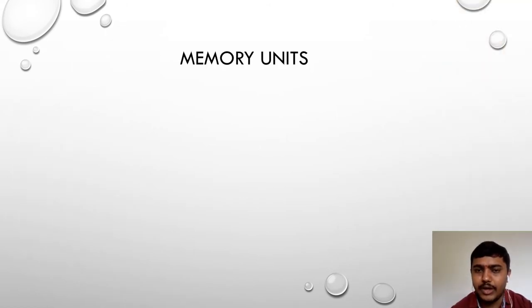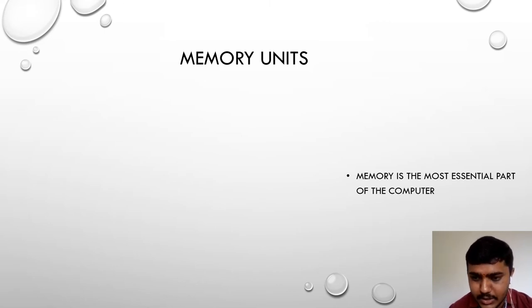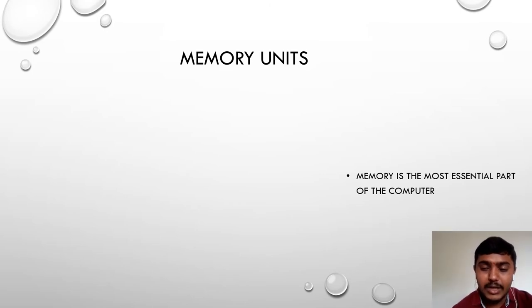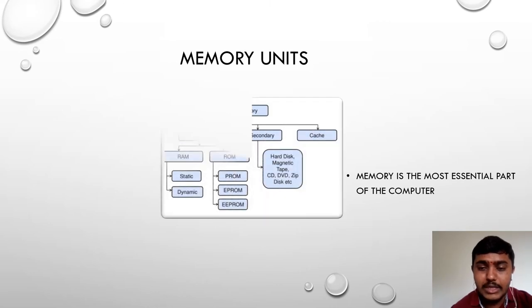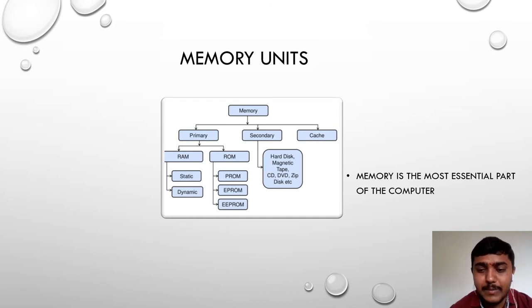The next concept is memory unit. Memory is one of the most essential parts of the computer. Without memory, we cannot survive — just as a human being cannot remember their name without memory, a computer has its own memory. Memory has been divided into three types: primary memory, secondary memory, and cache memory.